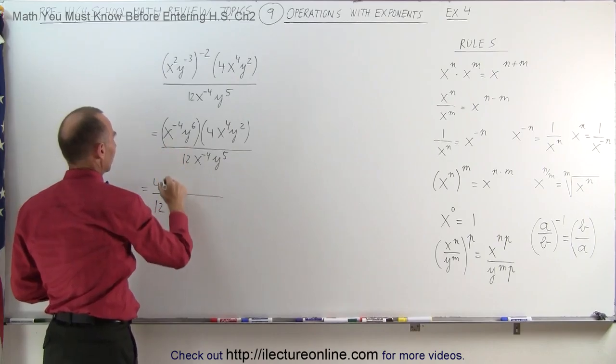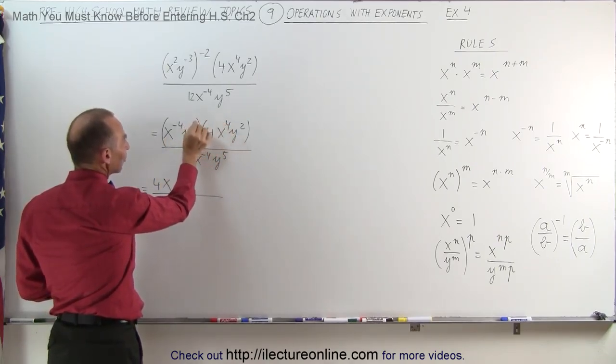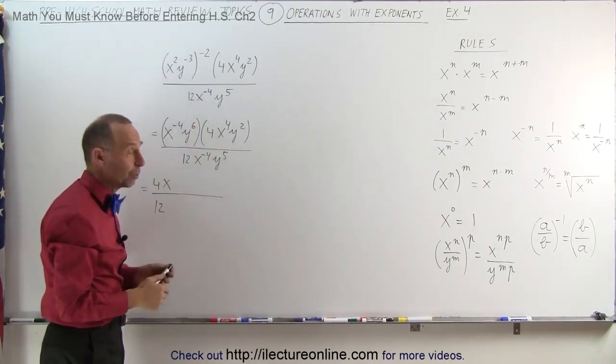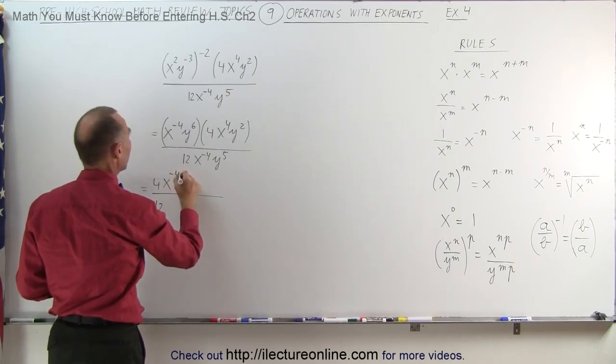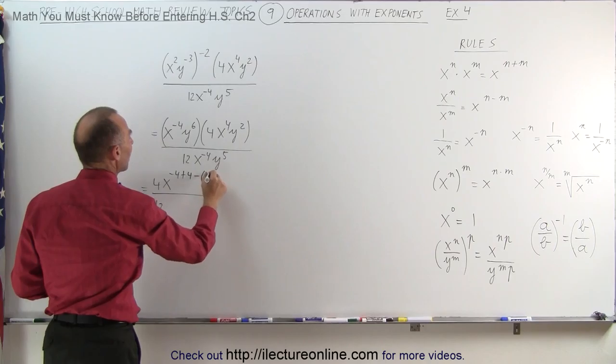We have an x. Now we're going to add up all the exponents. If we have an x times an x, we add exponents. When we divide by an x⁻⁴, we have to subtract exponents. So this becomes x⁻⁴⁺⁴⁻⁽⁻⁴⁾.